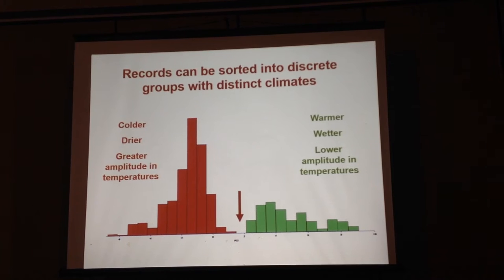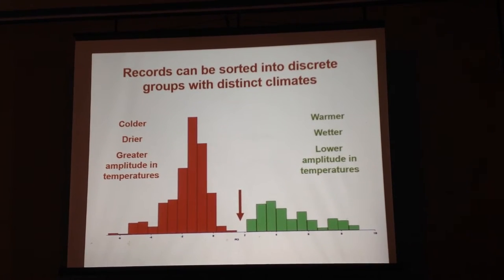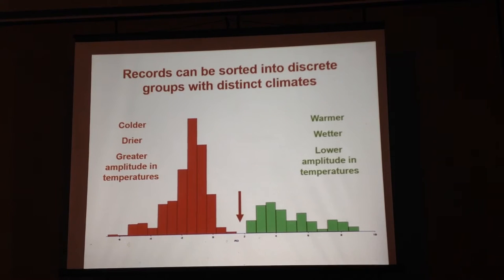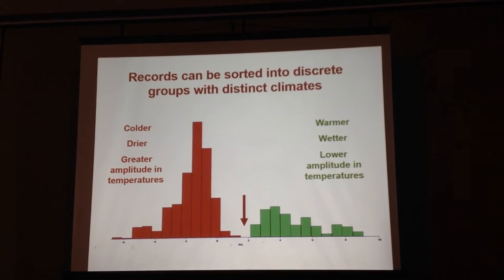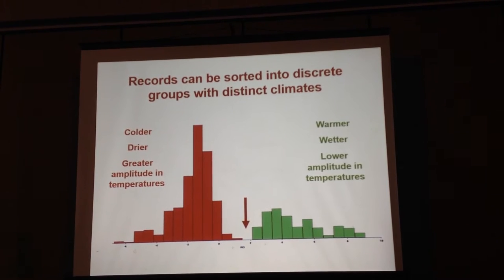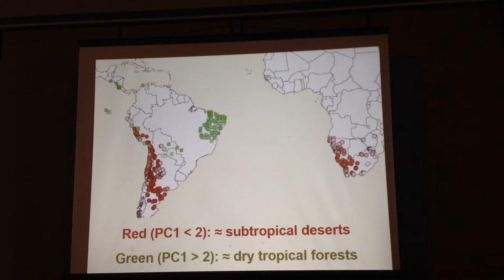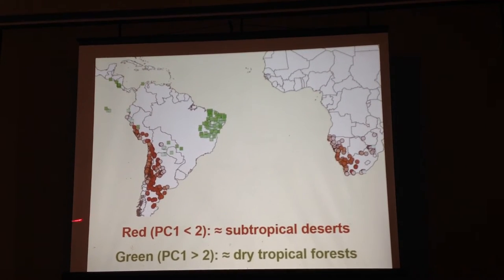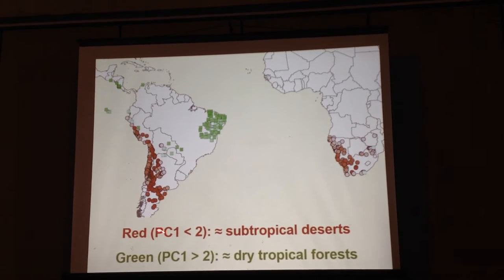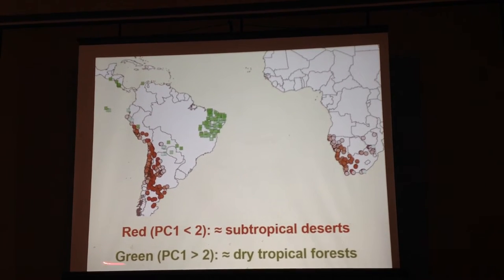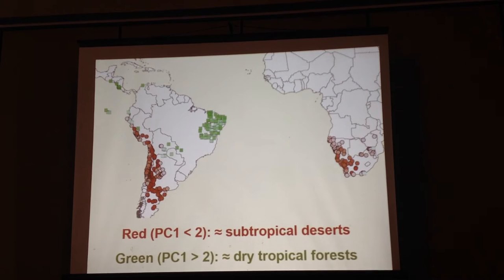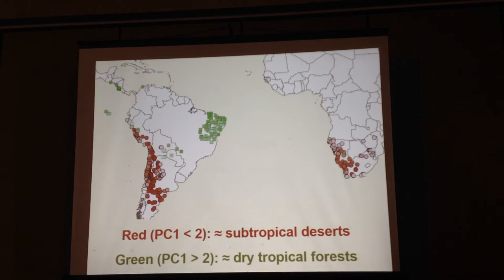This red group has colder climates, drier climates, and also greater amplitude in temperatures — generally harsher conditions than this other group, which has warmer temperatures, more precipitation, and also lower amplitude in temperatures. As you might have guessed by now, these two groups correspond to the deserts and dry forests that I was telling you about. Records with values of principal component 1 lower than 2 correspond to desert records, and the records with higher values correspond to dry forest records.